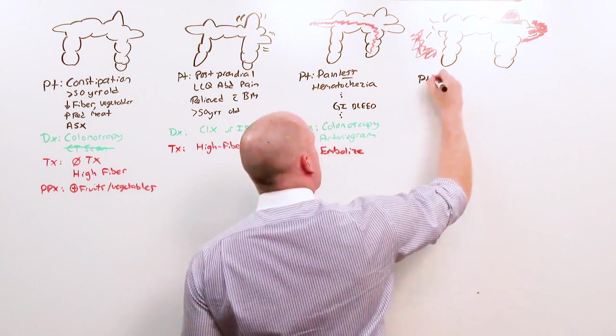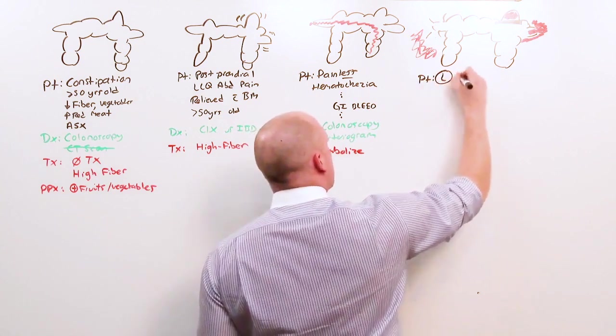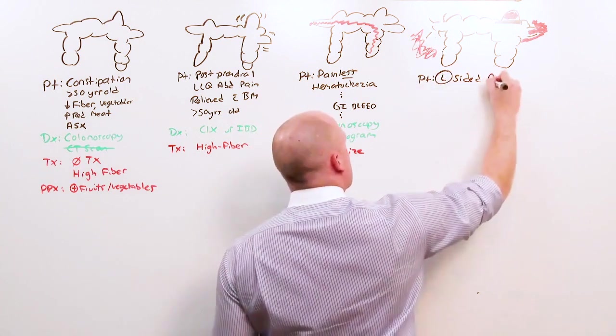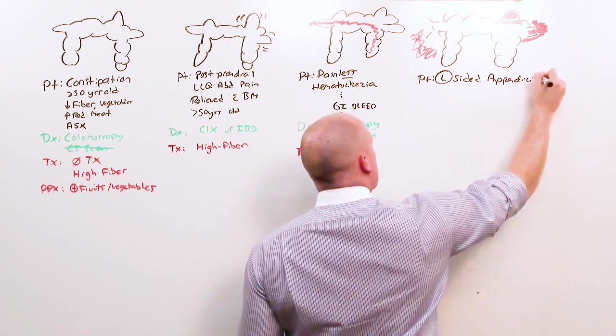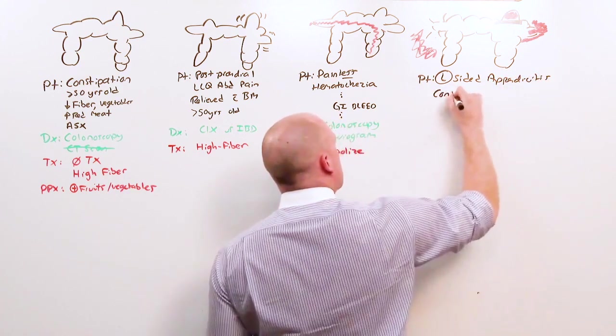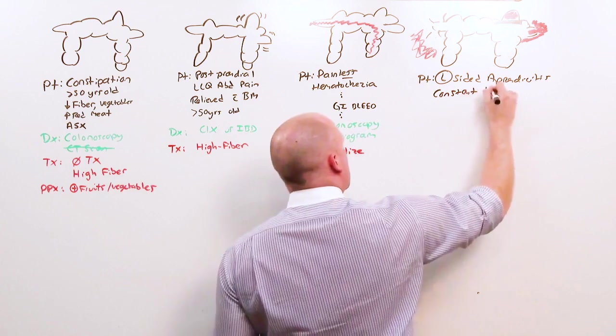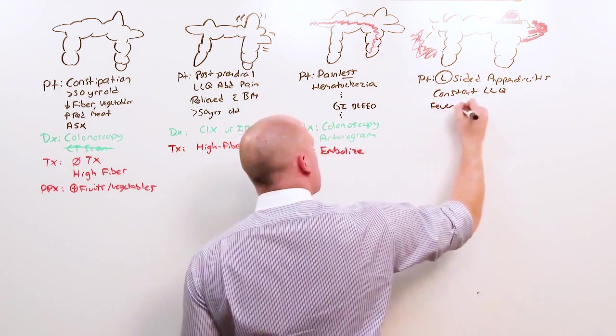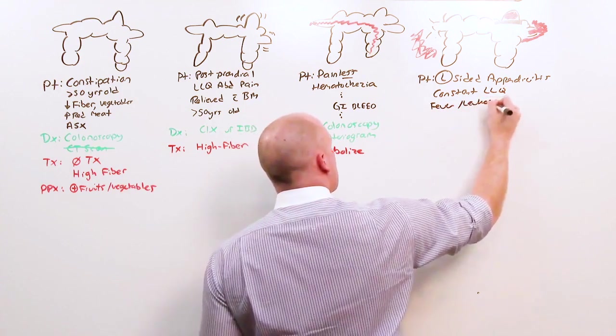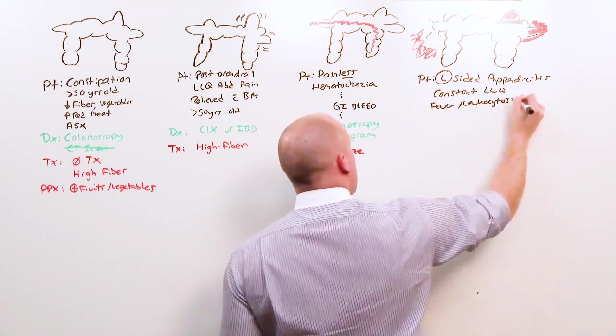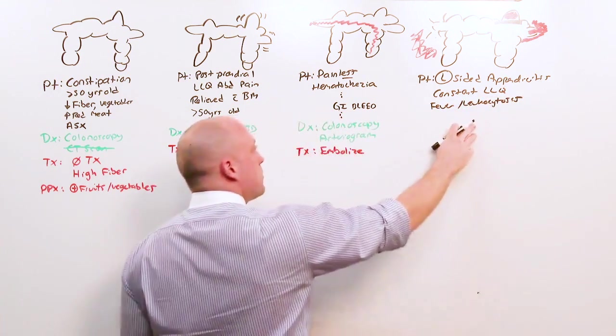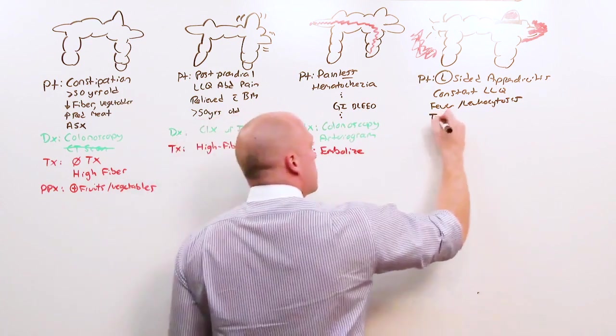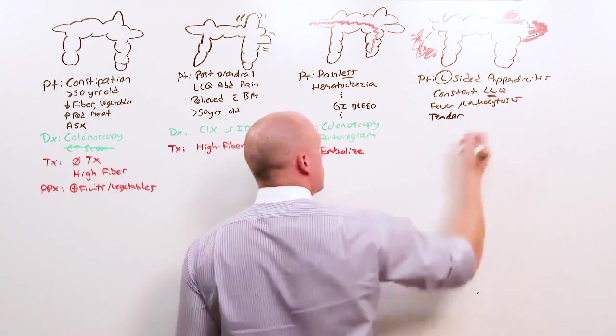The patient who presents with diverticulitis is going to present with left-sided appendicitis. There's going to be constant left lower quadrant abdominal pain. There will be fever and leukocytosis indicating inflammation, and the person is going to be tender all on the left lower quadrant.